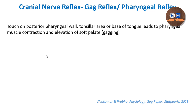The gag reflex is a cranial nerve reflex, also called the pharyngeal reflex. It is an involuntary response to a stimulus. The stimulus is a touch on the posterior pharyngeal wall, tonsillar area, or base of the tongue, leading to pharyngeal muscle contraction. The response is contraction of the pharynx and elevation of the soft palate, giving a feeling of gagging or an urge to vomit.